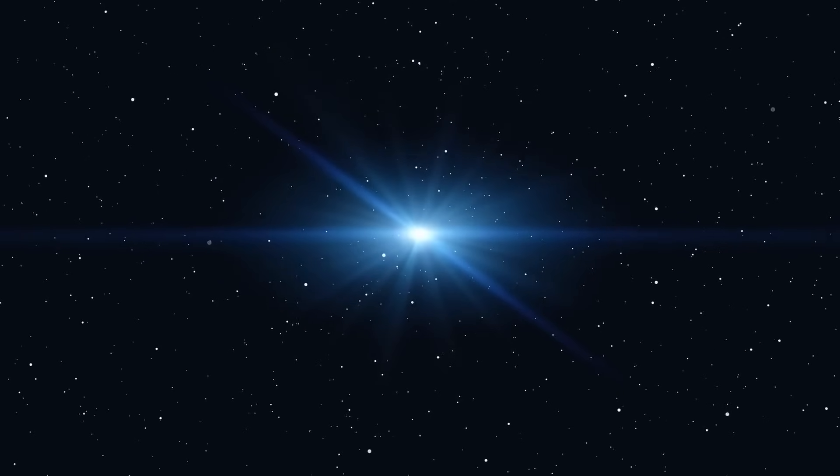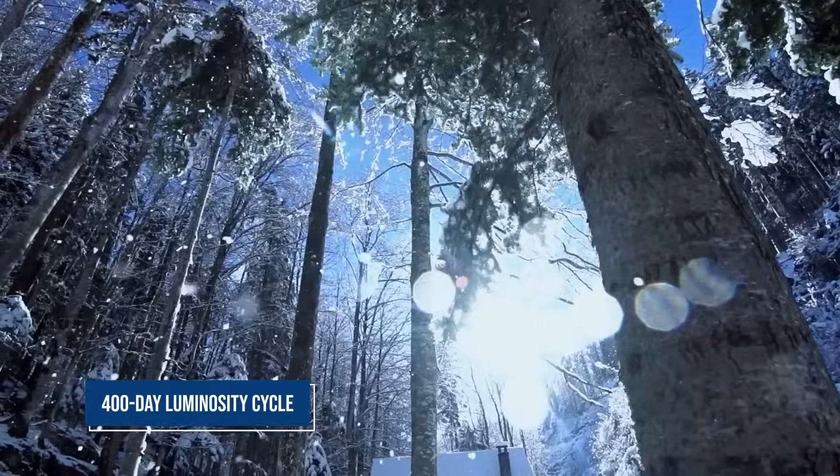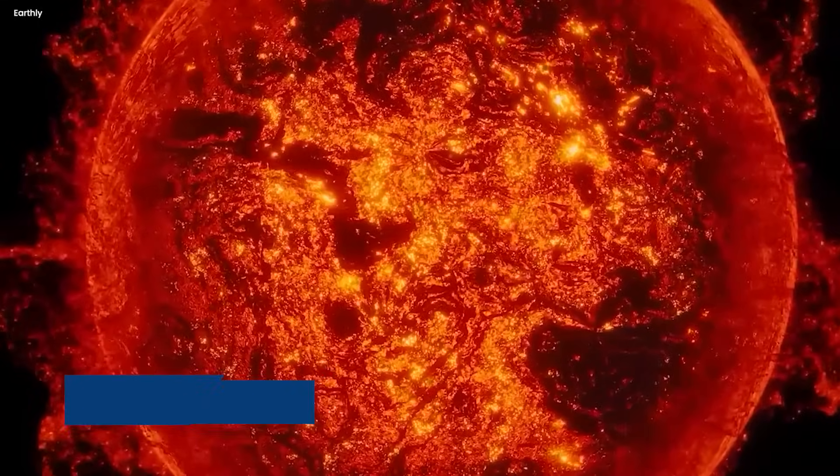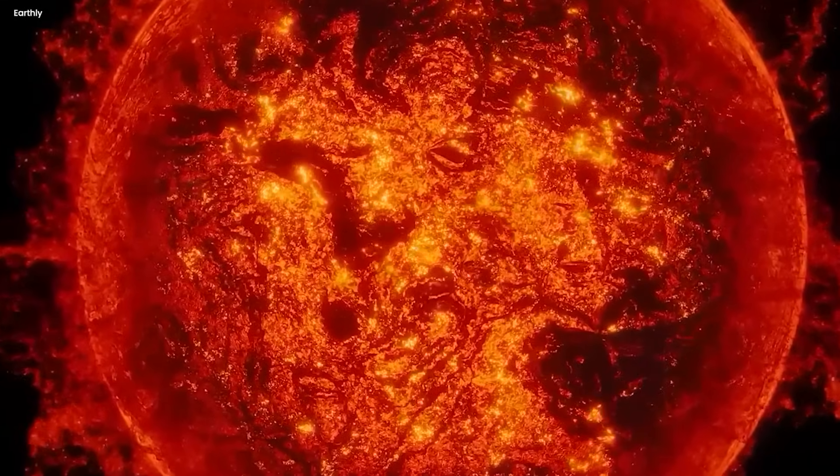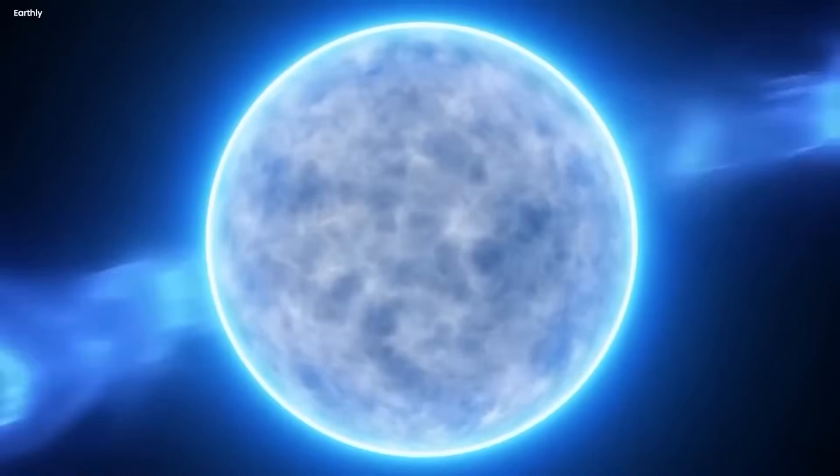In its stellar lifetime, Betelgeuse has clocked in a fairly consistent 400-day luminosity cycle. But with the great dimming, it seemed to rebel against its known nature, challenging our understanding of the celestial wonders above.